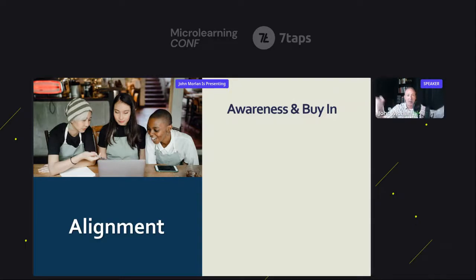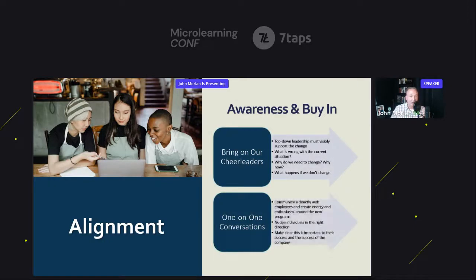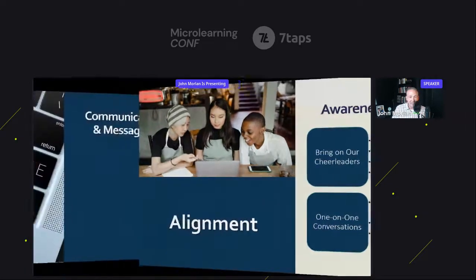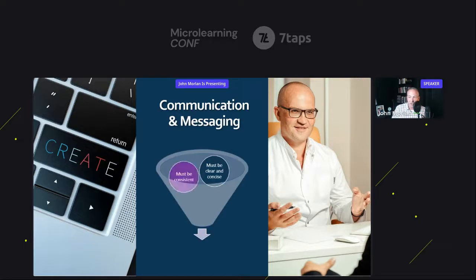Alignment is very important. We talk about employee buy-in, but alignment is so much more than that. We need to get everyone in the organization pulling in the same direction — leadership, management, and employees. It's like a tug of war team — if everybody wasn't pulling in unison, you'd get dragged across the ground. So you want to bring on your cheerleaders, make sure that leadership and management are very visible and supporting the change. You want to have one-on-one conversations, influence, and nudge people in the right direction — I love nudge theory. There's a second part of this: communication and messaging. The messaging must be clear and concise, consistent, and relatable — in all things: emails, memos, training.